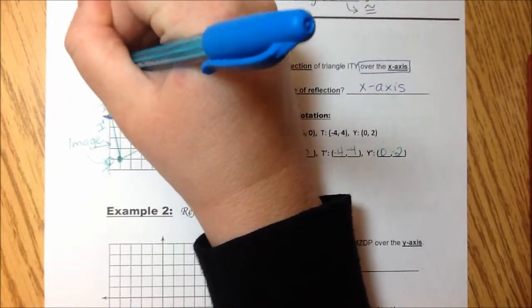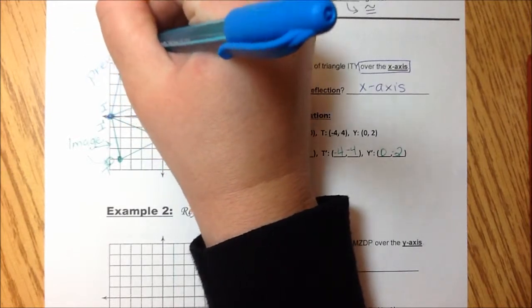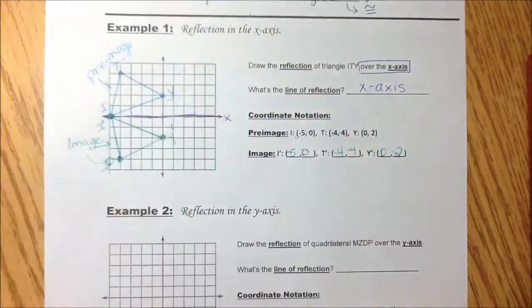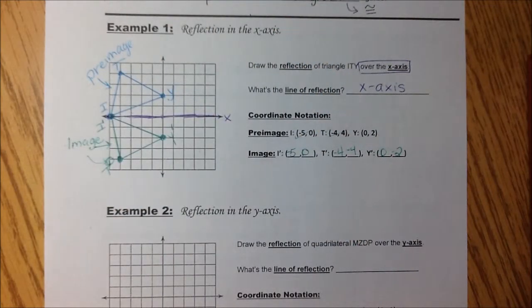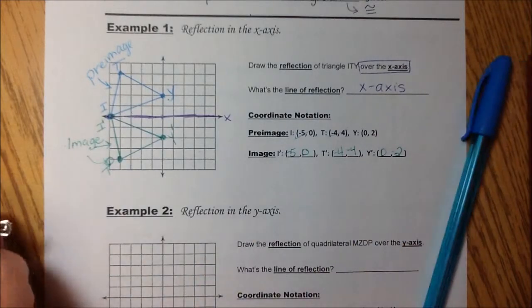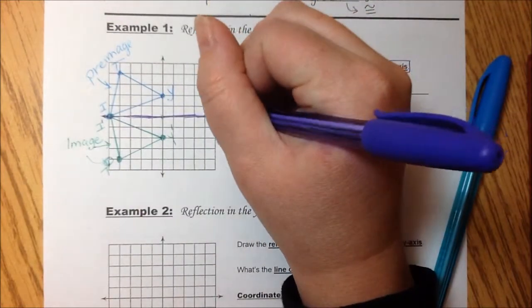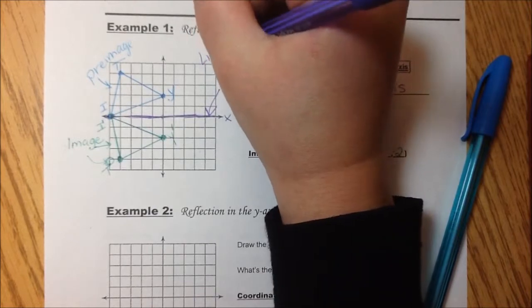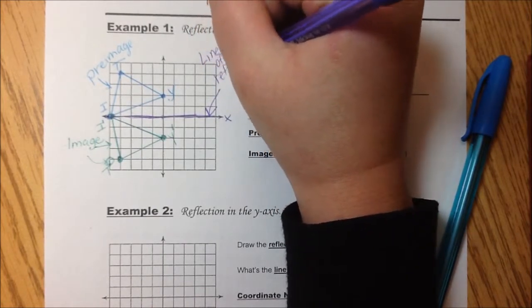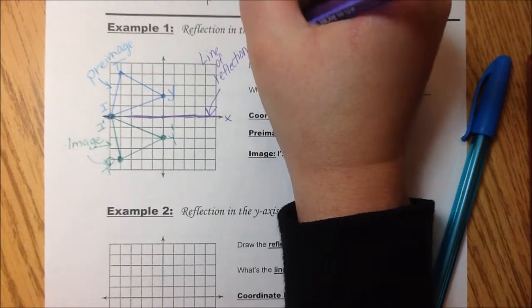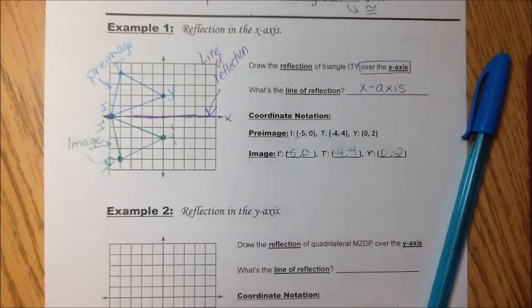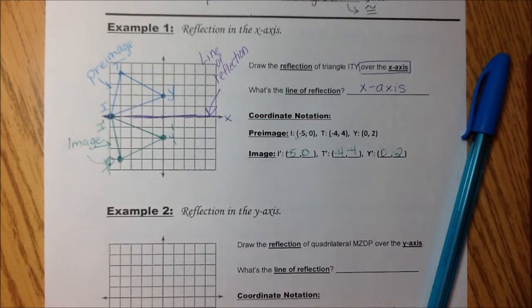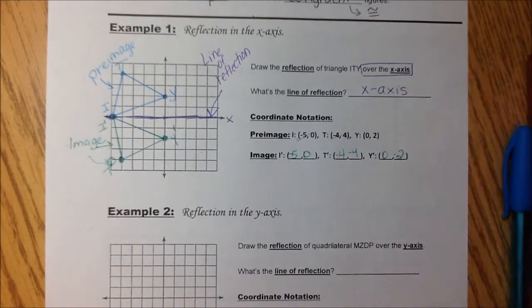Blue, this is our pre-image. That's where we started. And purple, this is our line of reflection. Okay. Let's do another one.